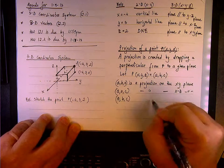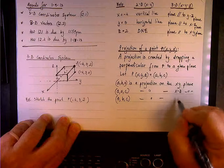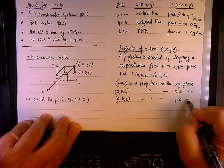0, B, C is a projection on the yz plane, right?